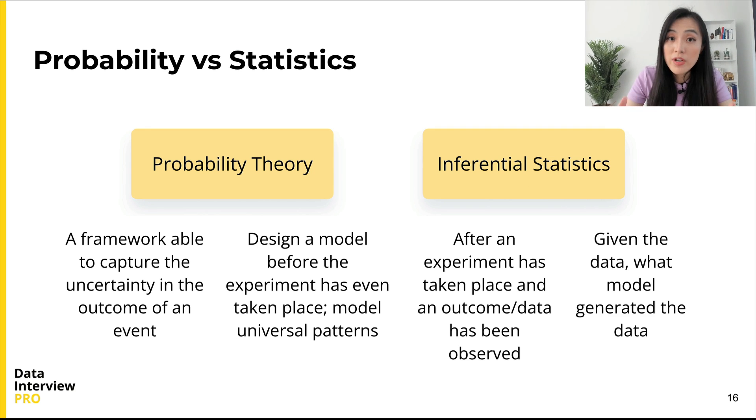To this end, inferential statistics either assumes a theoretical model and estimates its parameters from the data, such as sample means and sample variations, or it could try to infer the general model directly. Essentially, for inferential statistics, we are given the data and ask what model generated the data.